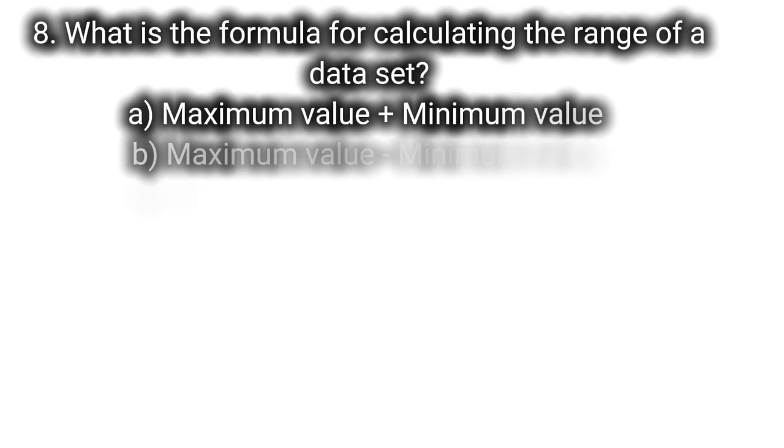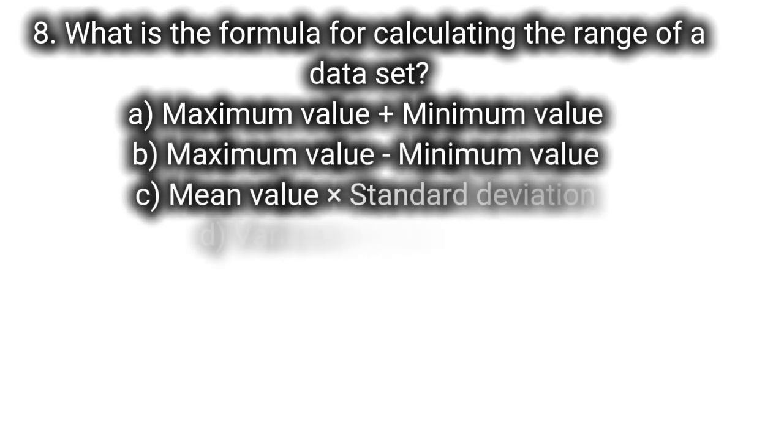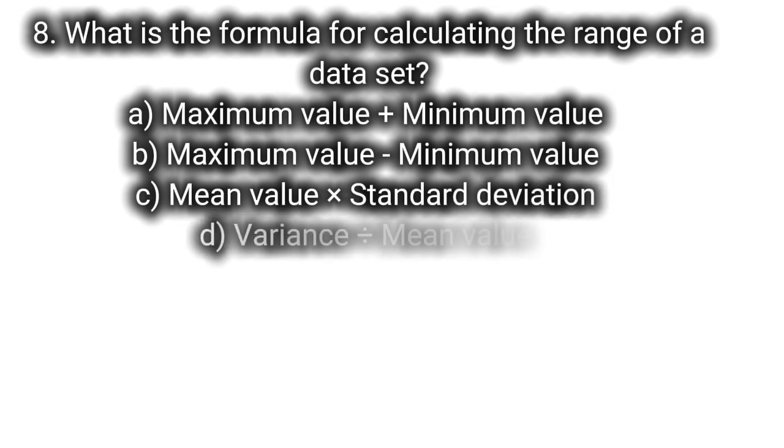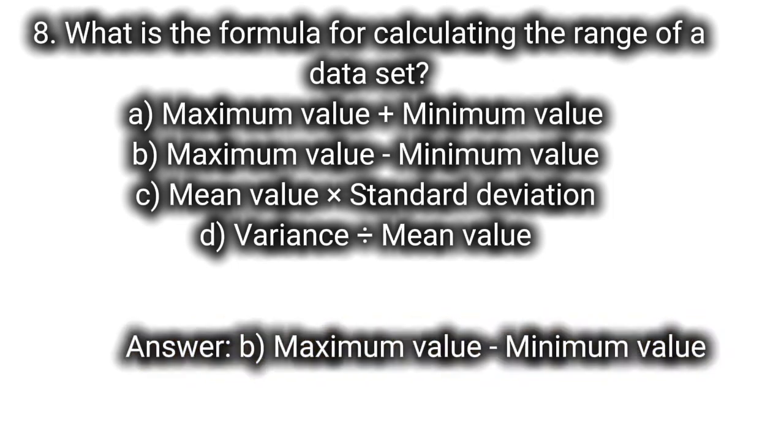Q20: What is the formula for calculating the range of a dataset? A. Maximum value plus minimum value, B. Maximum value minus minimum value, C. Mean value times standard deviation, D. Variance minus mean value. Answer: B. Maximum value minus minimum value.